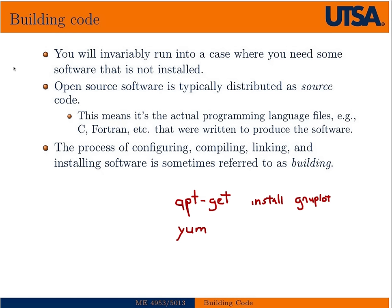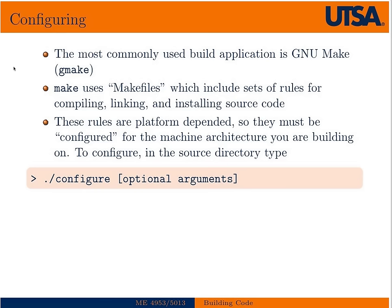Open source code is typically distributed as source code, meaning it's the actual programming language files — whether C, C++, or Fortran — that were written to produce the software. Typically in scientific computing most software is written in C, Fortran, or C++. The terminology I use to encompass the whole process of configuring, compiling, linking, and installing software I refer to as building or building code.